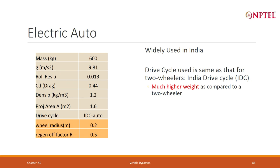Let us now look at an auto. One of the major changes is the mass — the gross vehicle weight — because there will be about three passengers plus the driver. The air density is 1.2 kg/m³, the projected area is 1.6 m², and we will use the IDC auto drive cycle, which is the same as the IDC two-wheeler drive cycle. The wheel radius is 0.2 meters, and we take a regeneration efficiency of 0.5, which we will vary.